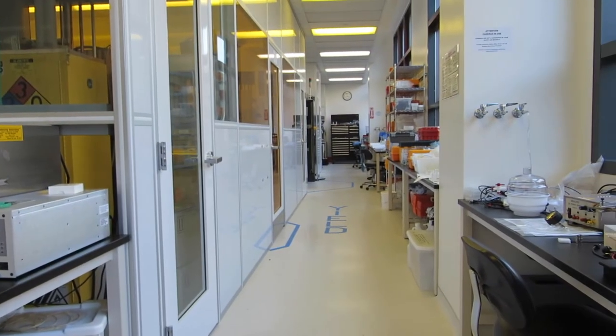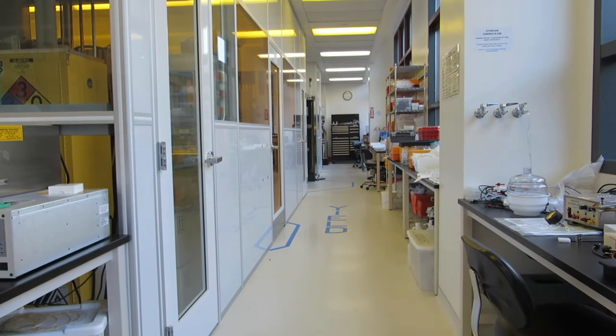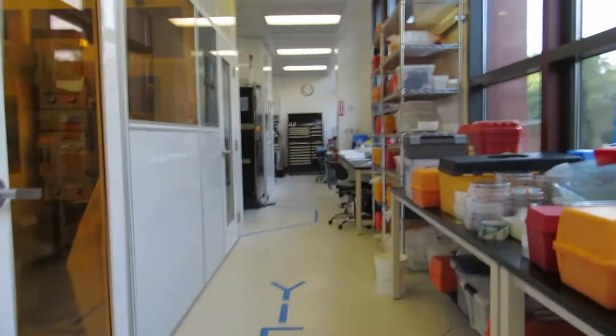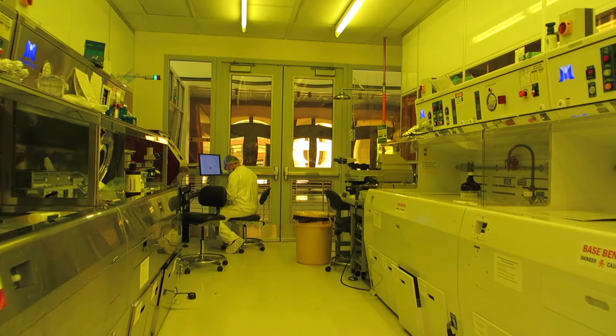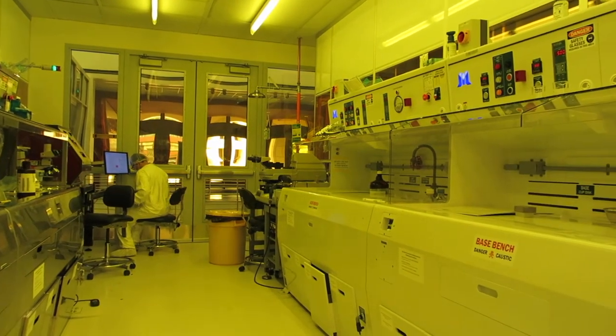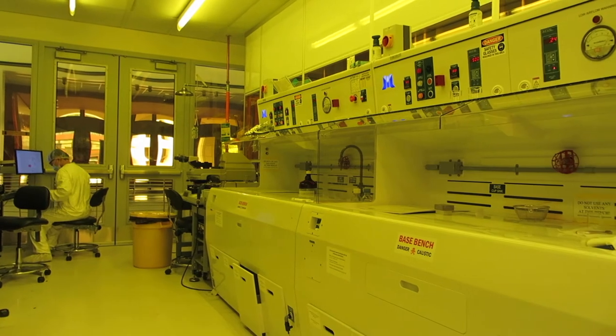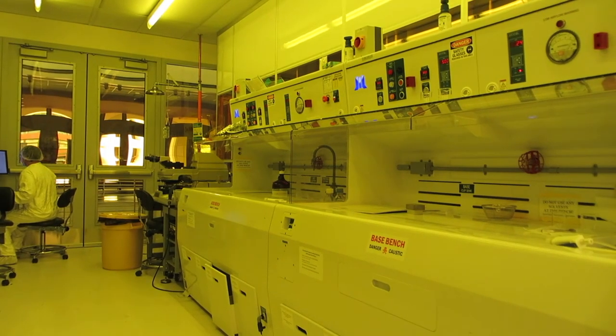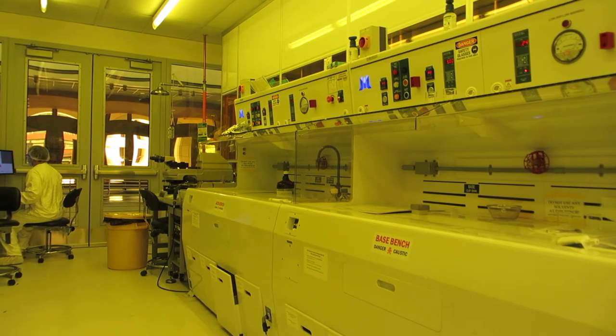Now we're going to move on to the next room which we call the yellow room. The windows and doors are yellow to avoid exposing photoresist. This is where photolithography is done and it's where the wet benches are located. Someone is working here now so we'll come back to this room later.